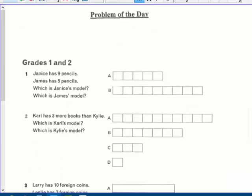Page 2, problem of the day again. Grades 1 and 2. This is a very easy bar modeling page. It's for grades 1 and 2. Janice has nine pencils. James has five.